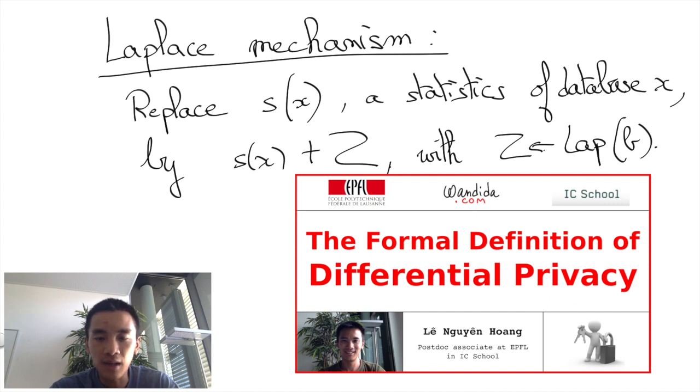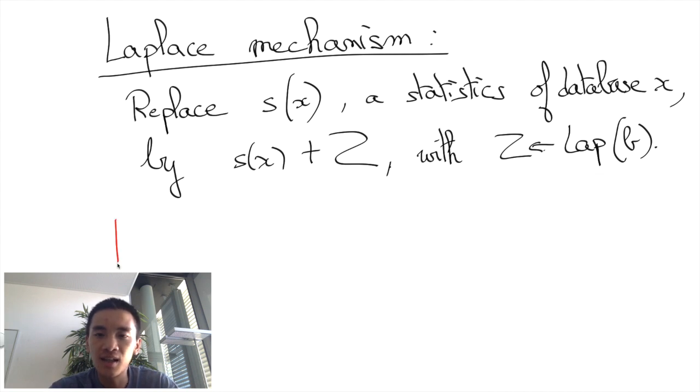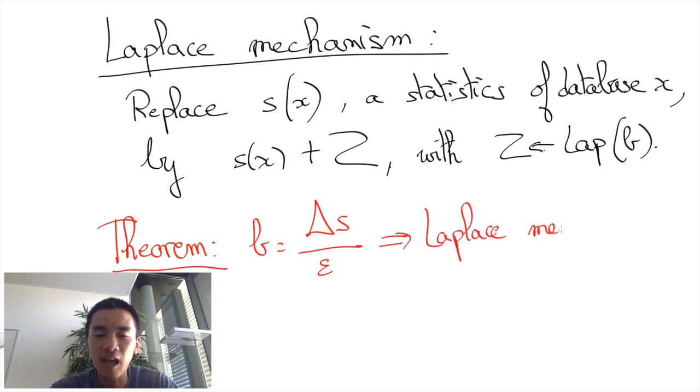The full theorem asserts that if the noise Z is a Laplacian noise with parameter B equals to delta S divided by epsilon, then the database query is guaranteed to be epsilon differentially private.